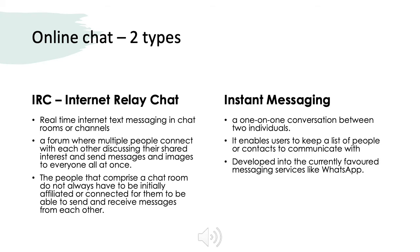A subsequent development was instant messaging, which initially began as a one-to-one conversation or chat between two individuals. It does not involve a chat room or a specific channel devoted to a group of people. It began as a one-to-one messaging facility and gradually became much more developed. Today, some of the most favored messaging services like WhatsApp can be considered as an extension of that initial text messaging facility.